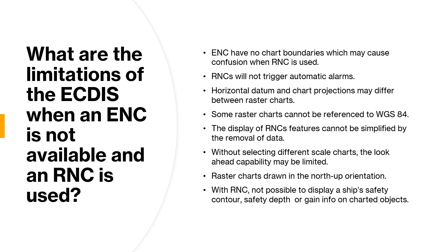The fifth and final question for this video is: what are the limitations of ECDIS when the ENC is not available and an RNC is used instead? Unlike ECDIS with ENCs which has no chart boundaries, raster navigation charts have boundaries based on paper charts, which is evident when shifting from one chart to the next and can cause confusion or distraction, especially near chart boundaries. Additionally, RNCs do not trigger automatic alarms like anti-grounding.